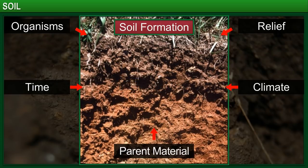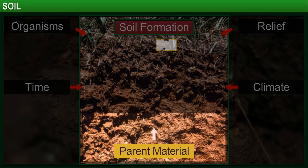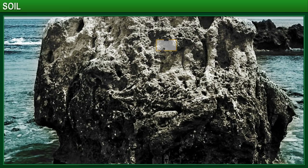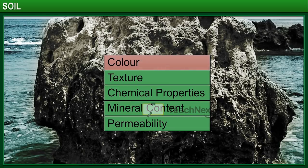There are a number of factors that affect the physical and chemical properties of soil in a landform. The primary factors are parent rock and climate in the area. The parent rock, or the rock from which the soil is formed, influences its color, texture, chemical properties, mineral content, and permeability.